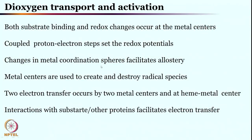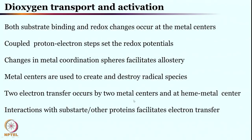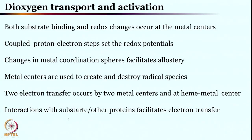Proton transfer and electron transfers are often coupled with each other, and they are responsible for the redox potential. The metal coordination sphere facilitates a number of processes. Metal centers are used to create and destroy radical processes — they can initiate a radical process and also terminate it. Two-electron transfer occurs at two metal centers; if two electrons are required, it is usually two metal centers involved, not one. One-electron transfer processes still predominate in biological systems, particularly at heme centers. Interaction with substrate and other proteins also facilitates electron transfer.